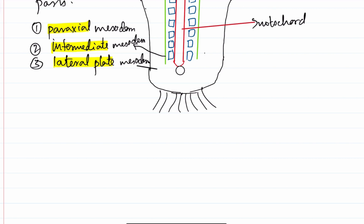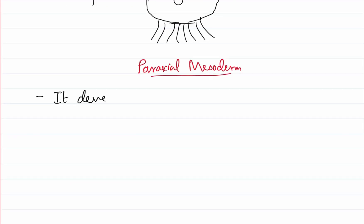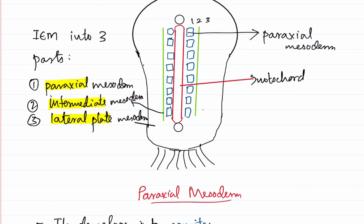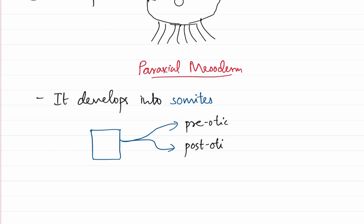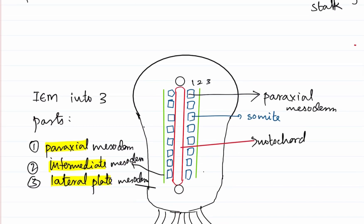So first, let's discuss about the paraxial mesoderm. The paraxial mesoderm develops into somites. The paraxial mesoderm — the cubical structure which we have drawn here — is what we call a somite. Somites are cubical structures that are present on the paraxial mesoderm, and they could be present at two parts. One is above the otic vesicle, which is the pre-otic part, and then there is the post-otic area, or the post-otic somite. The otic vesicle would be around the head region. The somites present above are the pre-otic somites, whereas the somites present below are the post-otic somites.